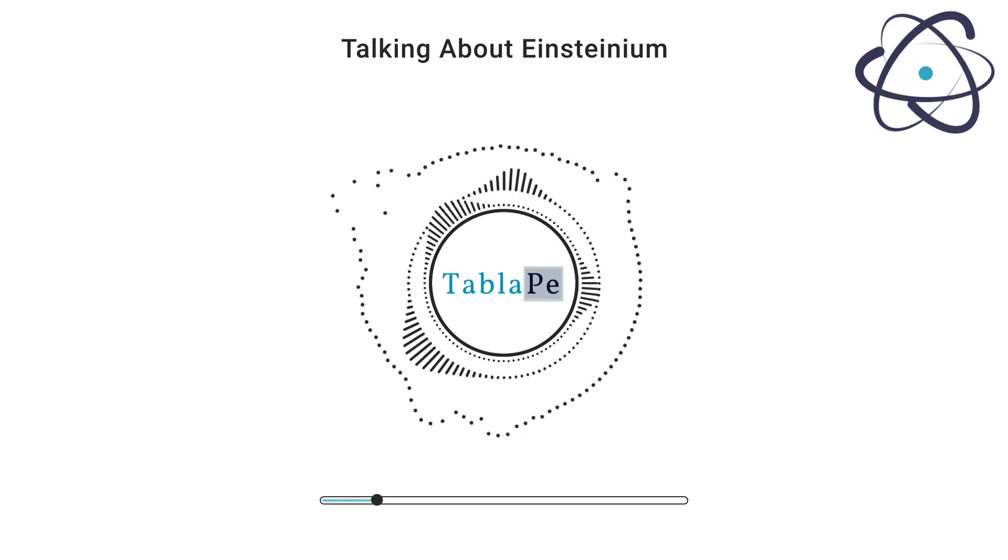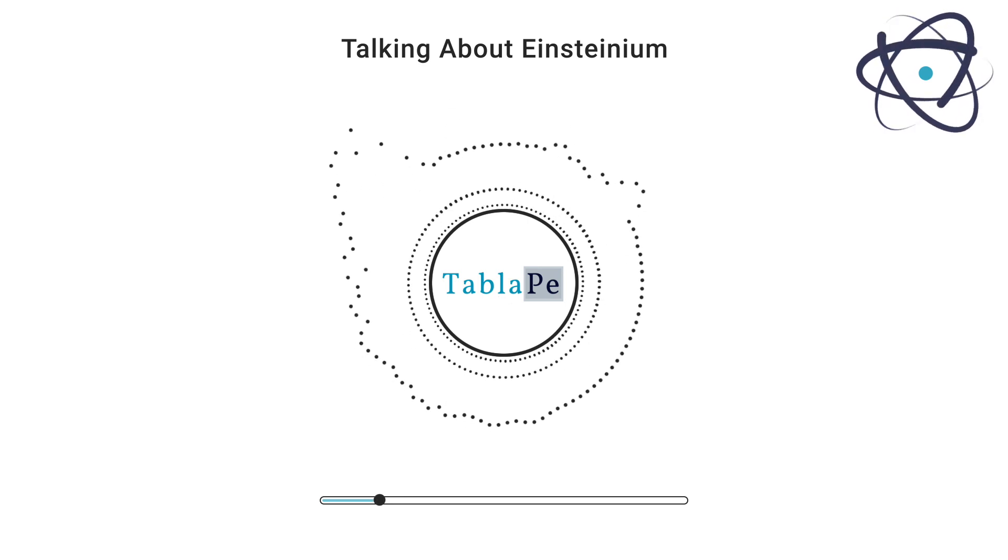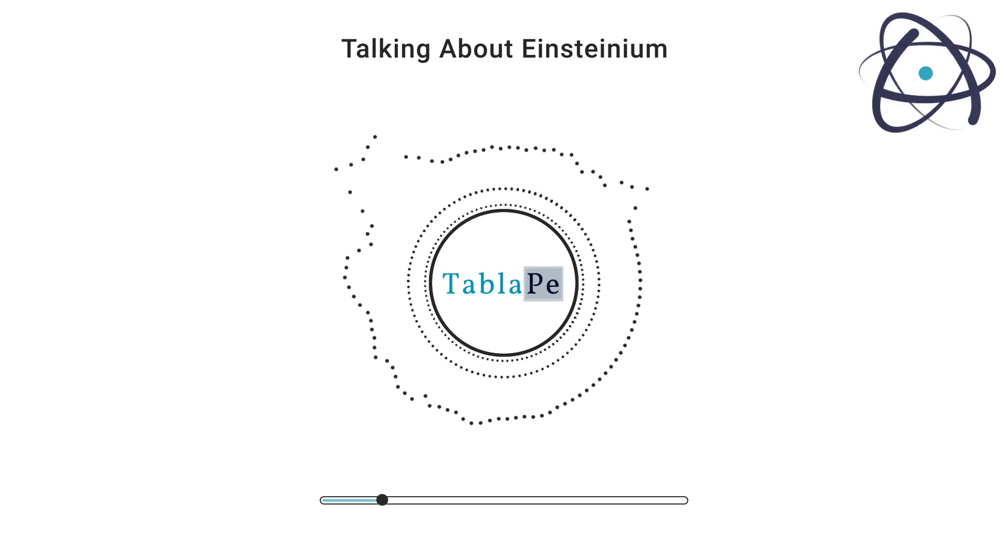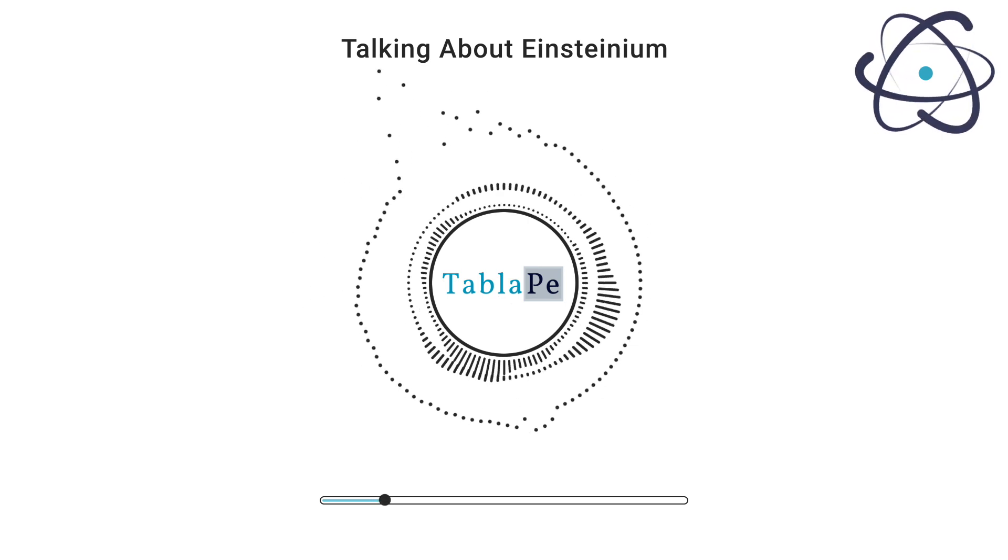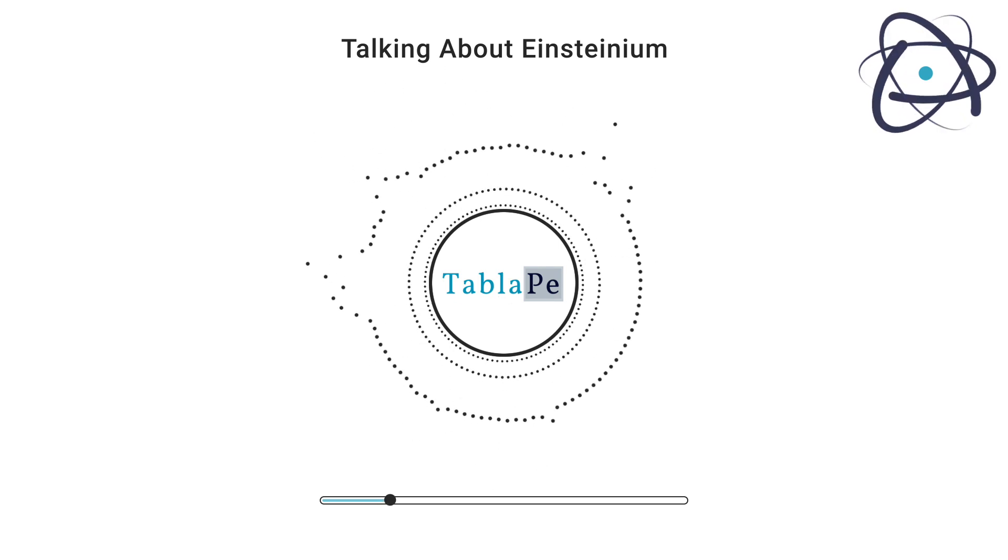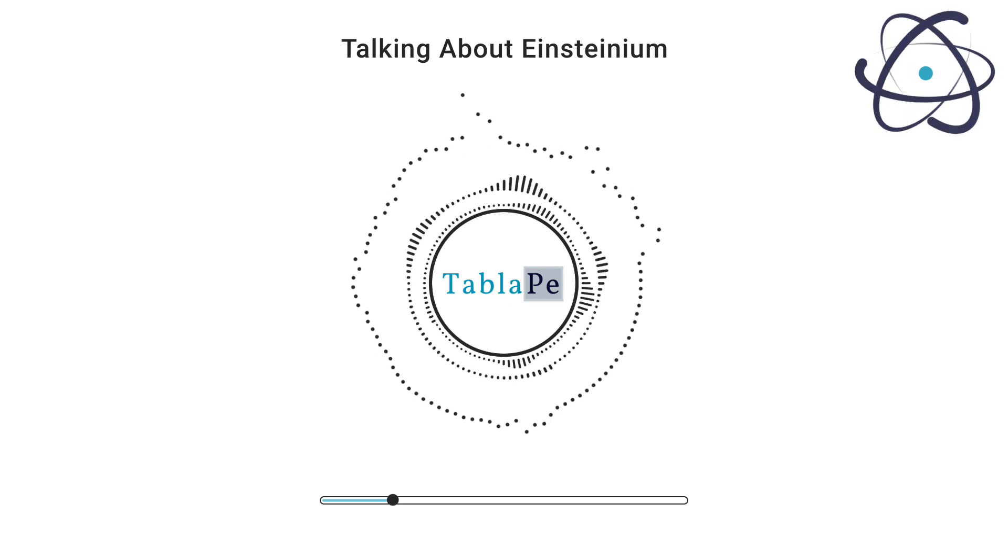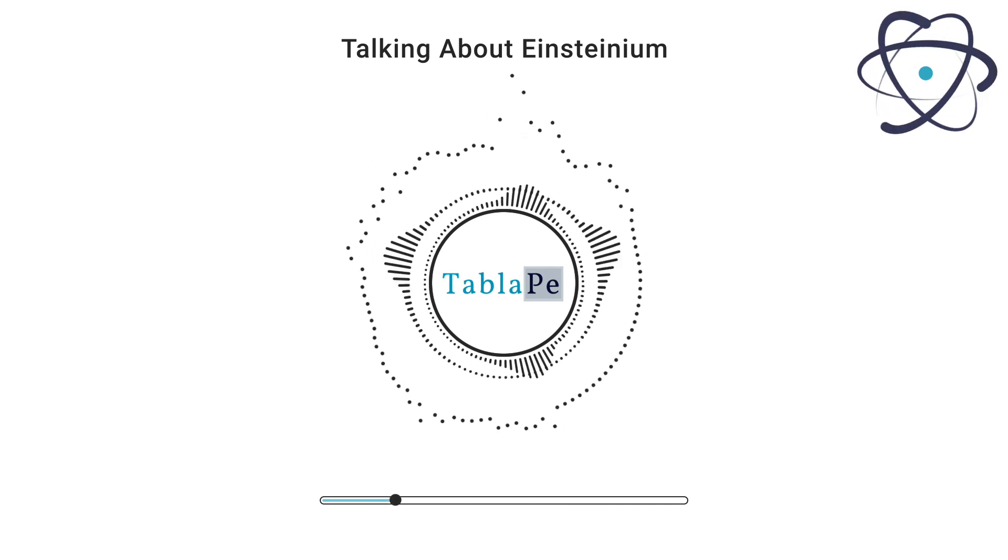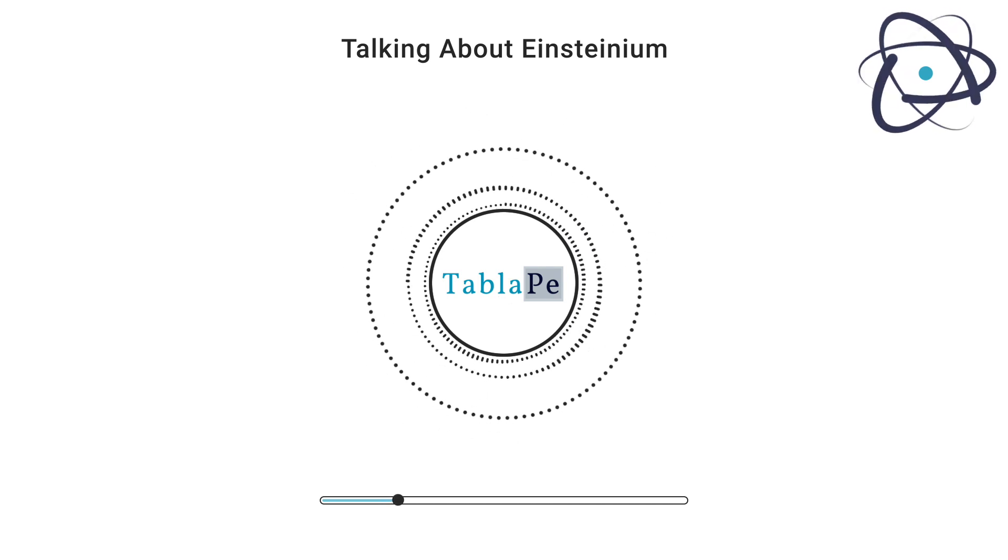The element was named in honor of Albert Einstein, the renowned physicist whose groundbreaking work transformed our understanding of the universe. Einsteinium's discovery was a significant achievement in the field of nuclear science, marking the expansion of the periodic table into the realm of synthetic elements.